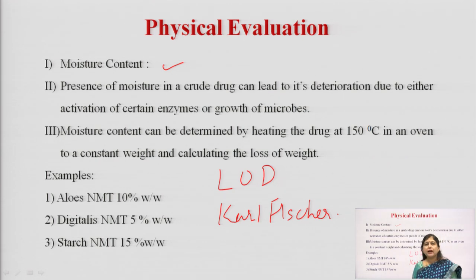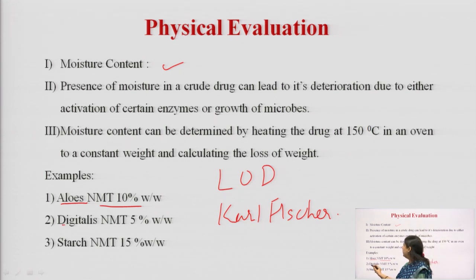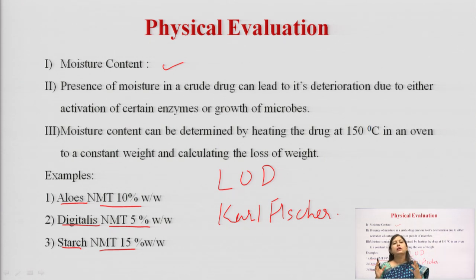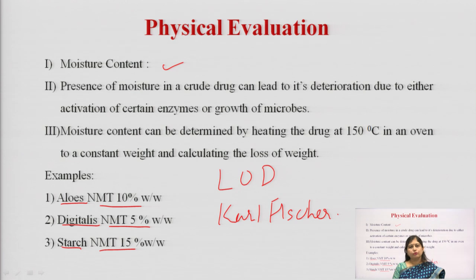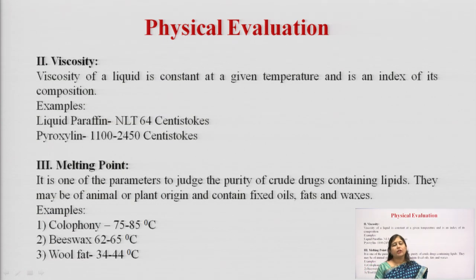The WHO guidelines give limits for moisture content in particular drugs. For example, aloe moisture should not be more than 10%, digitalis should not be more than 5%, and starch should not be more than 15%. Different drugs have different limits based on their tendency to degrade. Aloe is obtained from juice so it contains a lot of water; digitalis has glycosides which can break easily in presence of moisture, so it needs to be dried to less than 5% moisture.